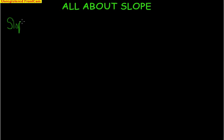Let's talk about slope. Hopefully you all know the symbol associated with slope — it is the letter M. It actually comes from a French origination. There is a French word, 'monte,' meaning to slope or to slant. Not that you'd ever be asked that, but I always think it's an interesting piece of trivia.